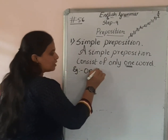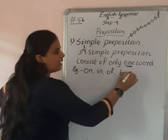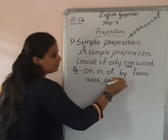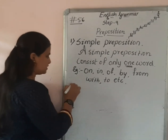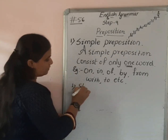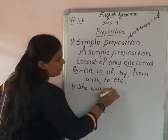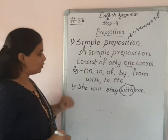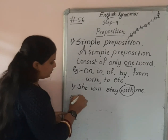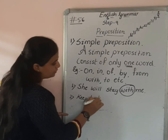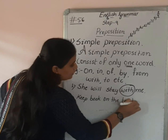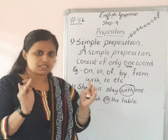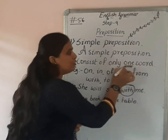Examples of simple prepositions — one word each: on, in, off, by, from, with, to, etc. Let's have these words in a sentence. For example: 'She will stay with me.' Here, 'with' is a simple preposition. Another example uses 'on' as a simple preposition. It is made up of only one word.